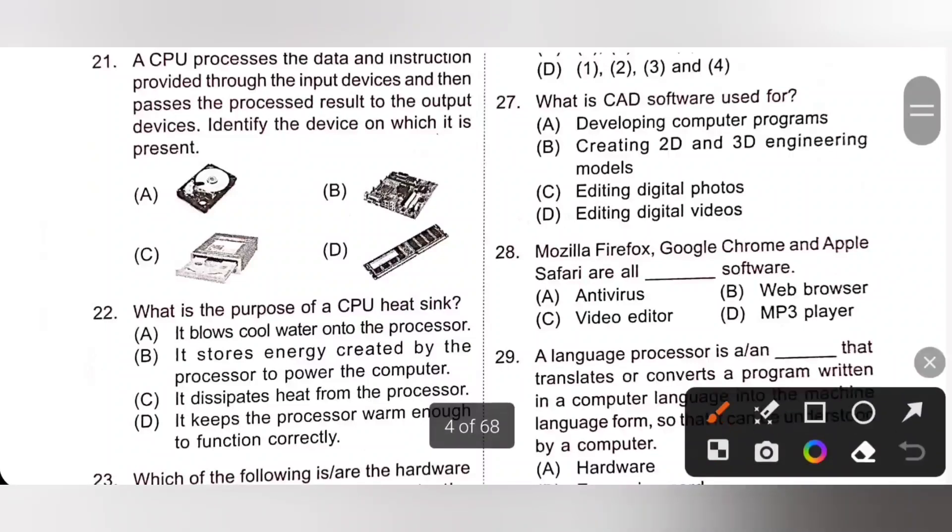Question 21. A CPU processes the data and instruction provided through the input devices and then passes the processed result to the output devices. Identify the device on which it is present. We know CPU is a processor which is placed on CPU socket available on motherboard. Option B is the correct answer.